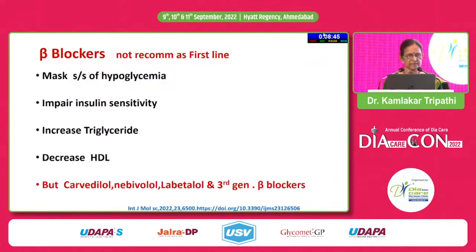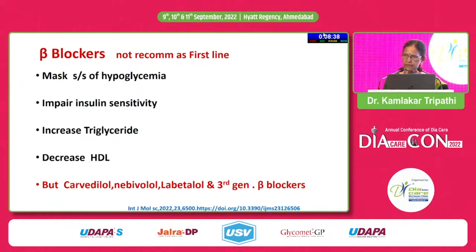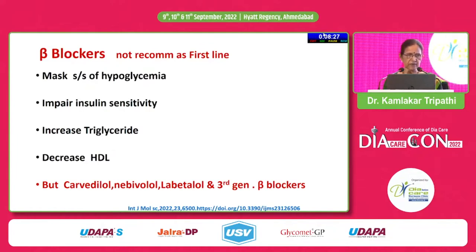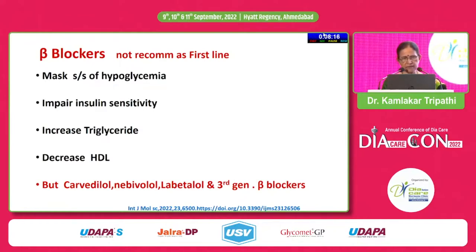Beta blockers are not recommended as first line for hypertension in diabetics — in non-diabetics yes, but not here. Beta blockers mask the signs and symptoms of hypoglycemia, impair insulin sensitivity, increase triglyceride levels, and decrease HDL. So there are more adverse effects than benefits. However, the newer beta blockers like carvedilol, nebivolol, labetalol, and third-generation beta blockers can be used.